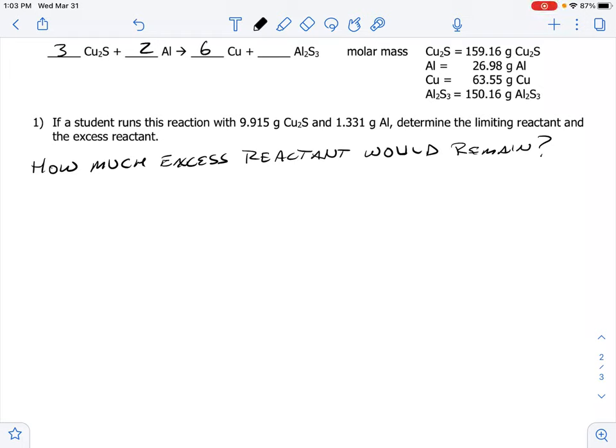I'm going to take you through how to calculate how much of the excess reactant would remain. To remind ourselves, in the prior video we determined that the copper(I) sulfide was the limiting reactant and the aluminum therefore has to be the excess reactant. The copper and the aluminum sulfide, these are our products, we're going to ignore those for right now.